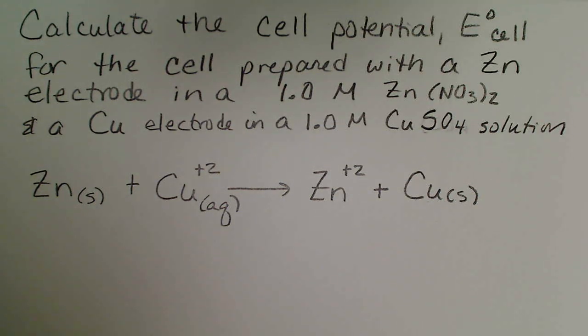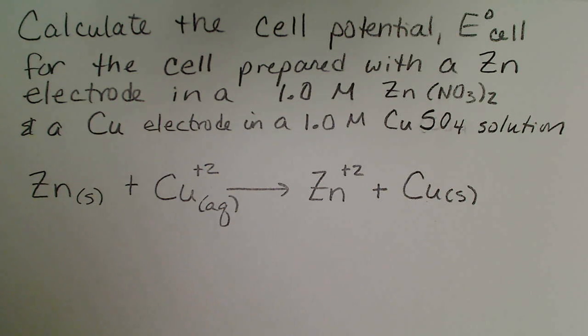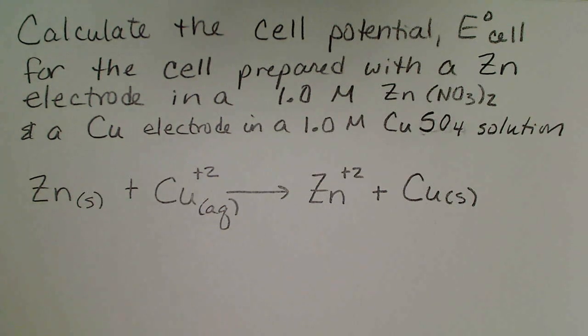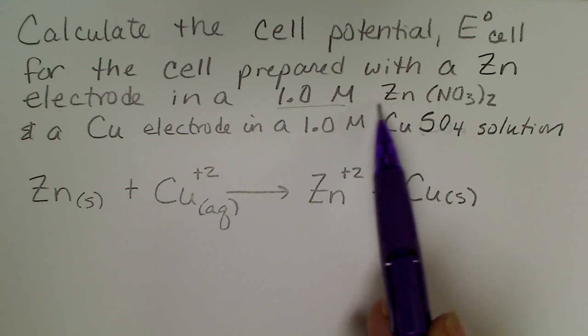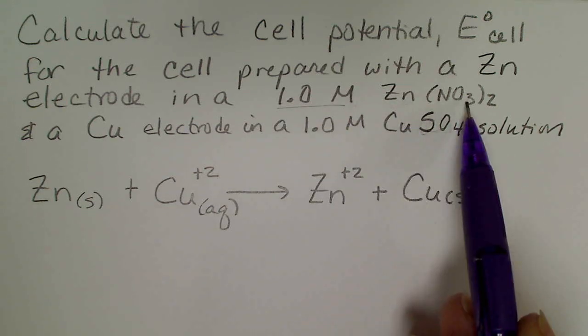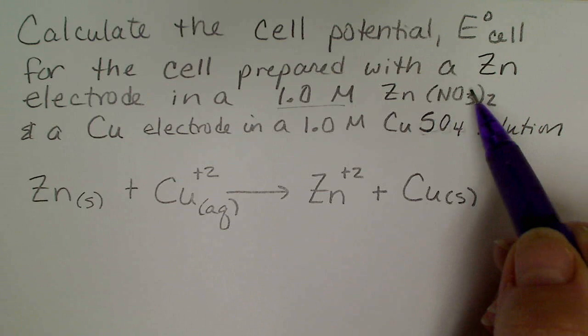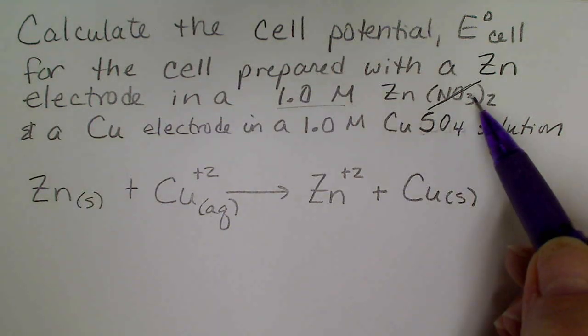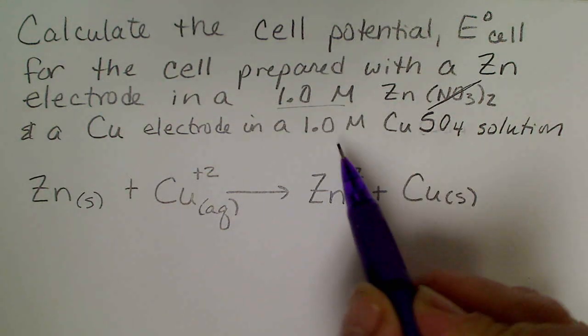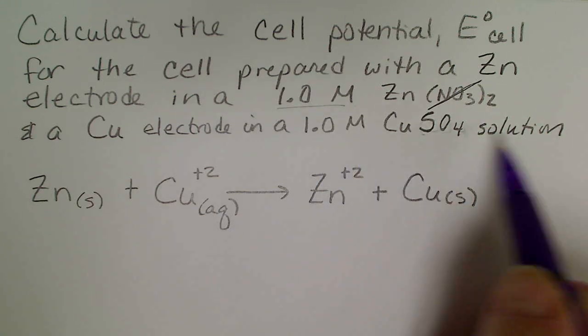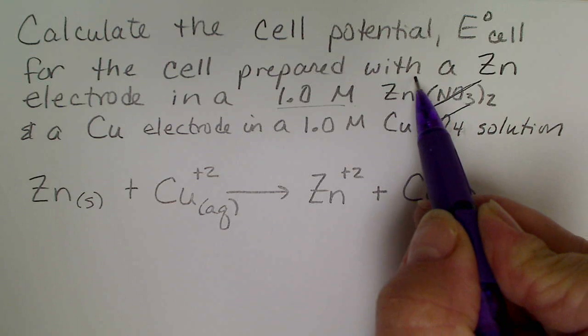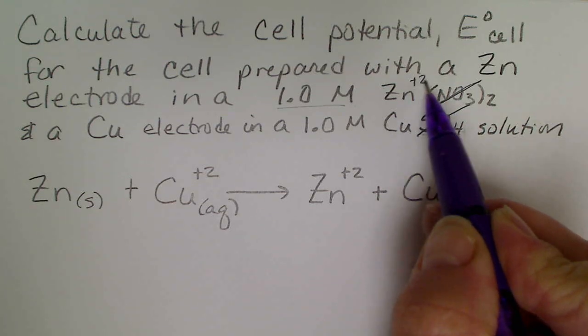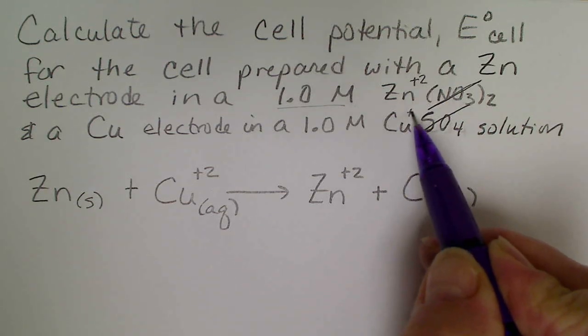We are going to calculate the cell potential under standard conditions, meaning that we have a 1 molar concentration of zinc nitrate. This is really the spectator ion, so it does not matter what that is. And we've also got a 1 molar copper sulfate solution. Again, sulfate would be a spectator ion, so our zinc is dissolved in solution as well as the copper.